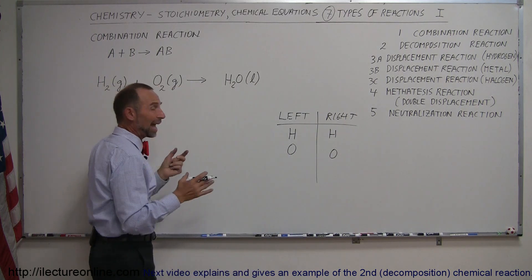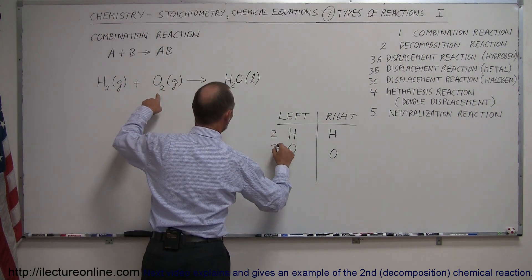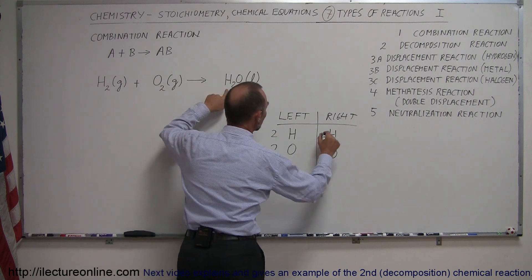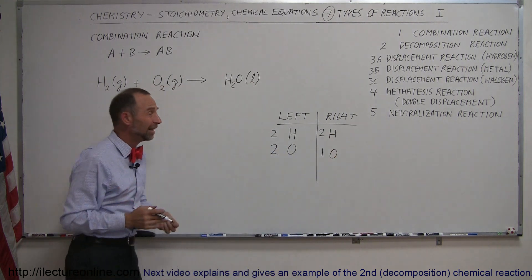Right now, we have two moles, or two atoms, depending upon how you want to look at it. We have two moles of hydrogen, and we have two moles of oxygen. On the right side, we have two moles of hydrogen, and only one mole of oxygen. So, you can see that this is not balanced.